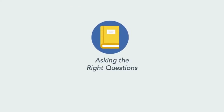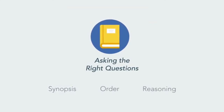In the book Asking the Right Questions, M. Neal Brown and Stuart Keeley present a synopsis of the questions that need to be asked, in the order in which they need to be asked, in reasoning through an issue as a critical thinker. These questions are: